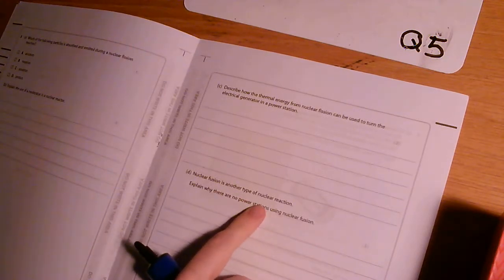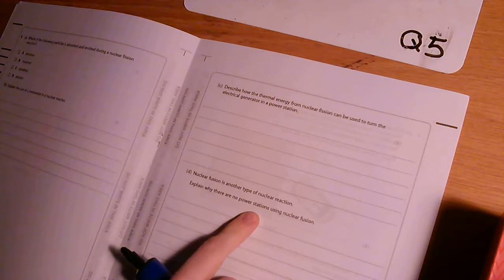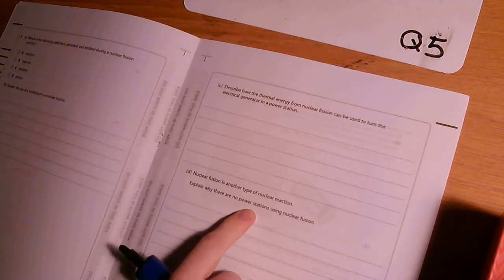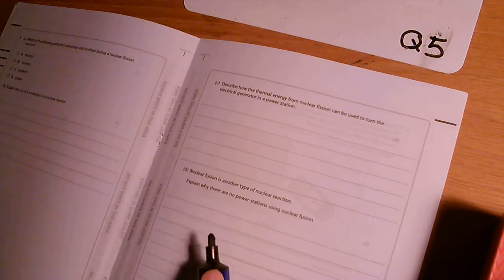Nuclear fusion is another type of nuclear reaction. Explain why there's no power stations using nuclear fusion. A lot of people said it would be too dangerous. That is not true. There are power stations in this country that use fusion and they are safe. In fact they're safer than nuclear fission stations. They just don't work very well so we don't have them hooked up to the national grid and they're not producing enough energy for them to be worthwhile.